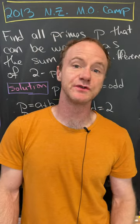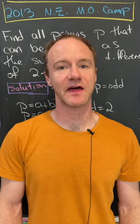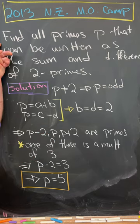Let's look at a quick number theory problem from the 2019 New Zealand Math Olympiad camp. We want to find all primes p that can be written as the sum and difference of two primes.